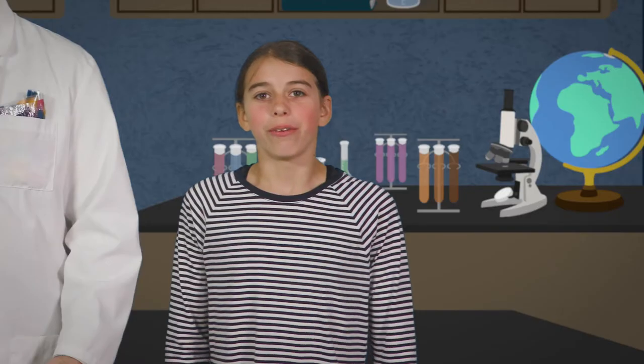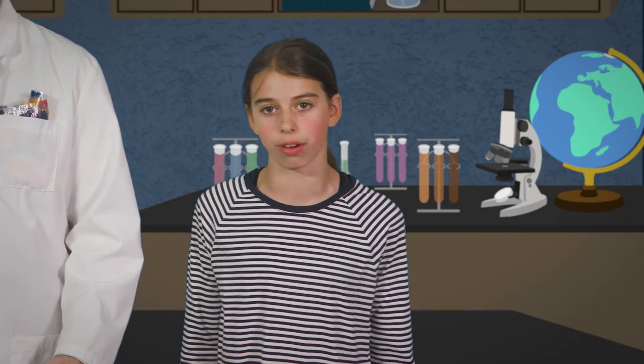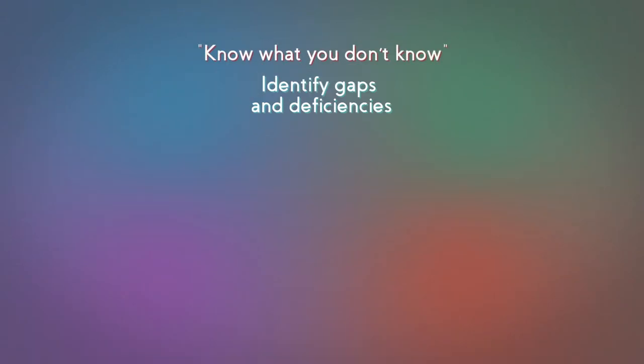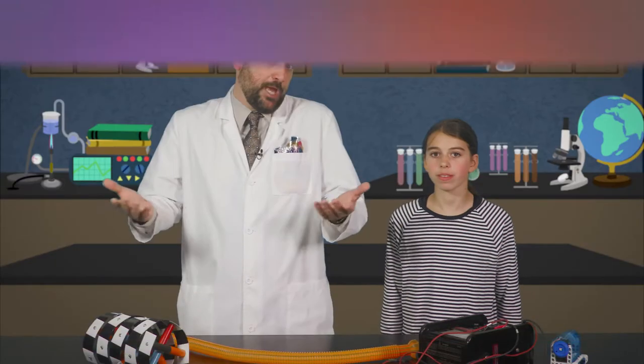What's our next step? Well, I don't want to spend too much time practicing the wrong thing, so I better check to make sure I'm right about what I don't know. Correct! Step two is to confirm our learning plan with our teacher. For teachers, this is where we check in with our students and offer feedback on their weak areas.